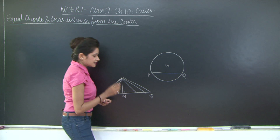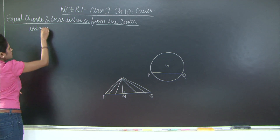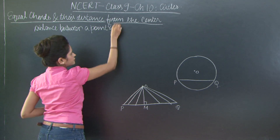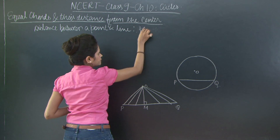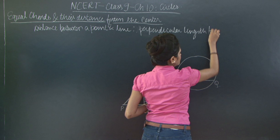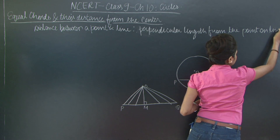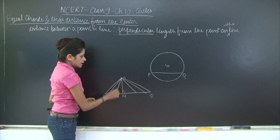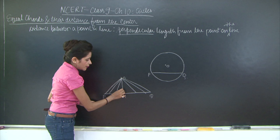This point M is the foot of the perpendicular. So the distance between a point and a line is the perpendicular length — the length between the point and the foot of the perpendicular. The key word here is perpendicular, because even though other lines can be drawn from the point to the line, the distance is specifically the perpendicular length.